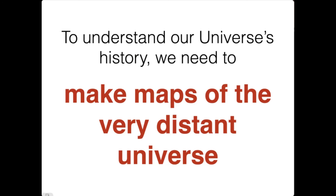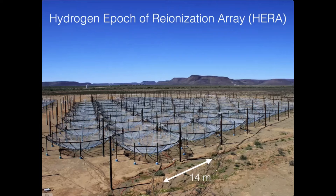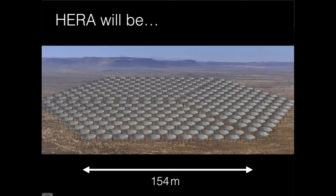And that's actually a great thing, because that means that to understand our universe's history, all I need to do is make a very big map—if it's big enough, the far-away parts will be old enough that I will literally be seeing a picture of the universe when it was younger. So I do that by using telescopes like the Hydrogen Epoch of Reionization Array, which is built in the South African Karoo. It's a radio telescope that consists of lots of smaller radio dishes that together work as a super telescope to make maps of the universe.